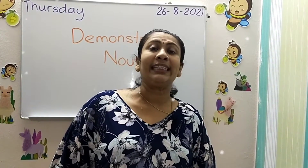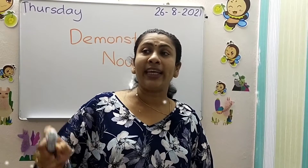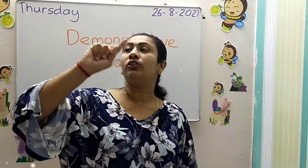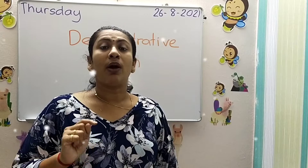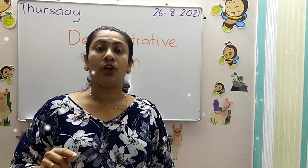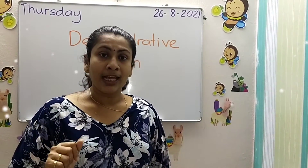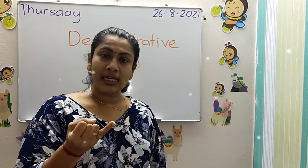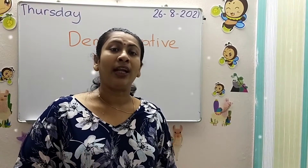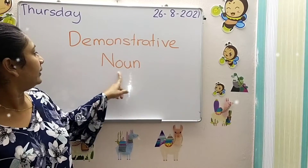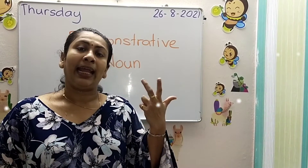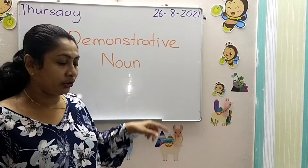Demonstrative noun is showing something. You take your finger, you want to show a thing, you want to show a person, you want to show an animal. Animal, people, and things are called nouns.